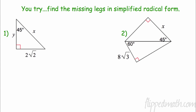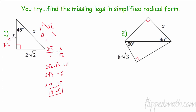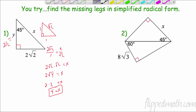Pause the video and try these on your own. In my worked solution: the two legs are both 2√2. Using the reference triangle with similar triangles — 2√2/1 = x/√2 — cross-multiplying gives 2√2 × √2 = 2√4 = 2 × 2 = 4. So the sides are 2√2, 2√2, and 4.